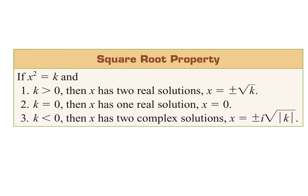If x squared equals k, there are some scenarios. If k is greater than zero, you're going to have two real solutions — for example, x squared equals 16 gives positive or negative 4. If k equals zero, you have only one solution because the square root of zero is just zero — there's no positive or negative zero. If k is less than zero, you're going to have two complex solutions — complex meaning imaginary numbers.